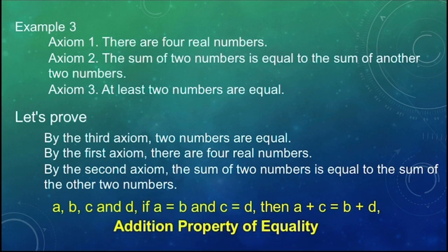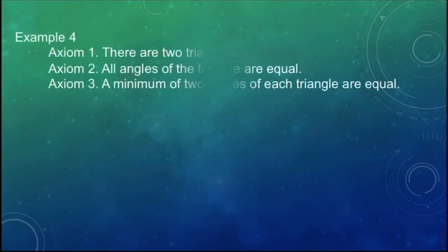And for our last example, example number 4: Axiom 1: There are 2 triangles. Axiom 2: All angles of the triangle are equal. Axiom 3: A minimum of 2 angles of each triangle are equal. For our explanation, let's prove.